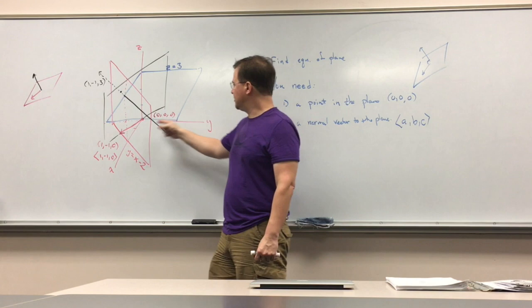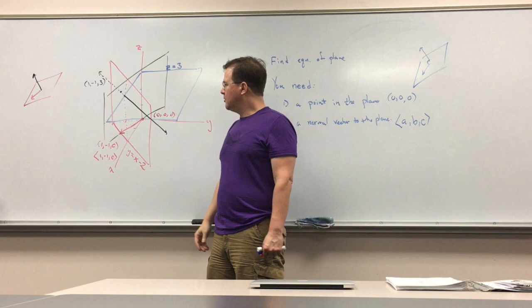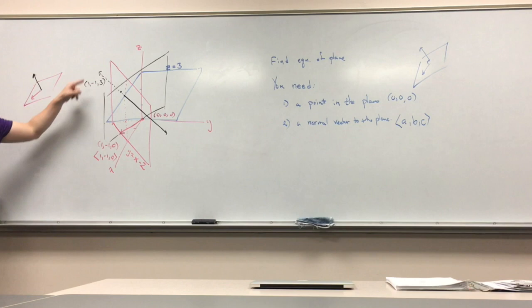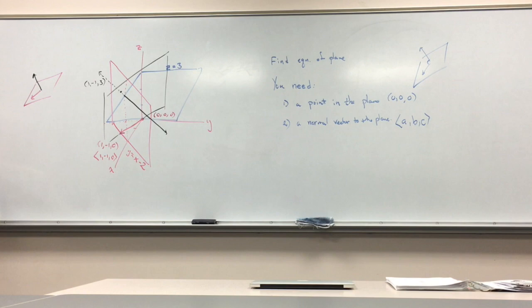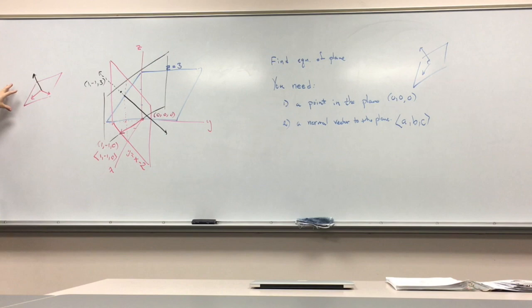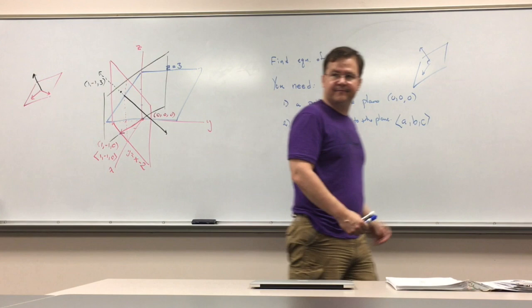When you think about it in terms of vectors, you don't need all these coordinates — you don't even need numbers at all. Once you have three points in the plane, you can subtract two points to get a vector in the plane. Pick another pair of points to get another vector. Then cross product them to get the normal vector.